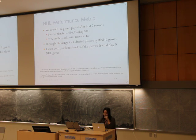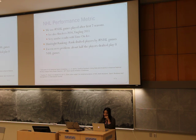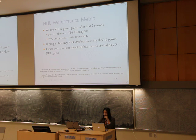For the outcome variable, we use the number of games played in a player's first seven seasons after being drafted, since teams have the rights to a drafted player for about seven years. The ground-truth ranking in our project is based on the actual number of games played by a drafted player. We also noticed that in our dataset, about half of the players didn't play any games in the NHL after being drafted, which brings about the problem of excess zeros.